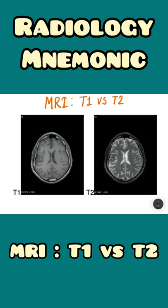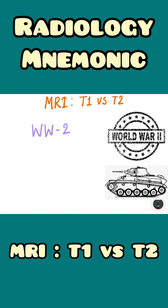Hello everyone, The Nerd Medi here. In this video we will learn a quick mnemonic to remember the difference between T1 MRI and T2 MRI. The mnemonic is World War II, that is WW2. WW means that water is whiter in T2 weighted MRI.